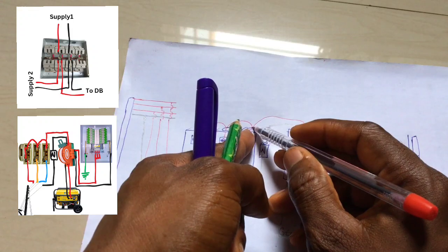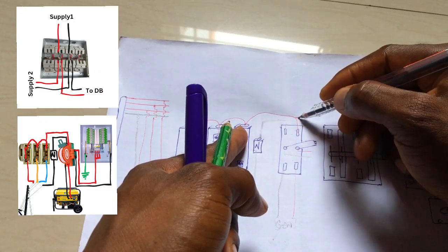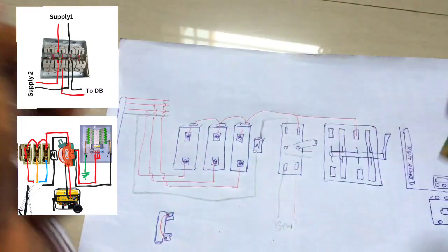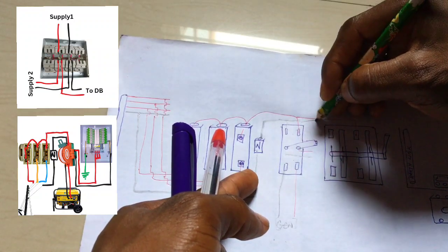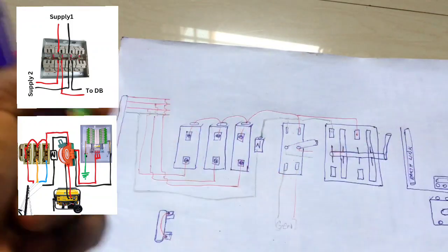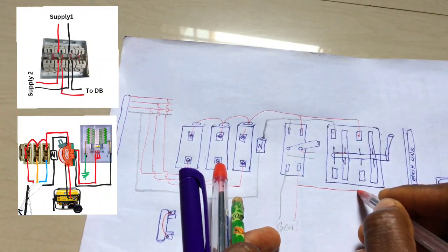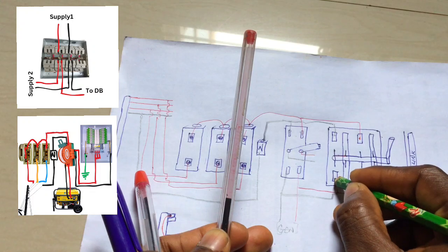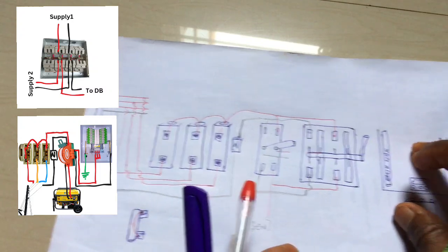Now let's assume we are making use of the gear changeover. From the public grid supply, live comes to this input point, and we equally pick the neutral here — this is the first source. If we are using a generator or any other alternative source, we do the same — loop live and neutral for the generator input. These output points go to our building.